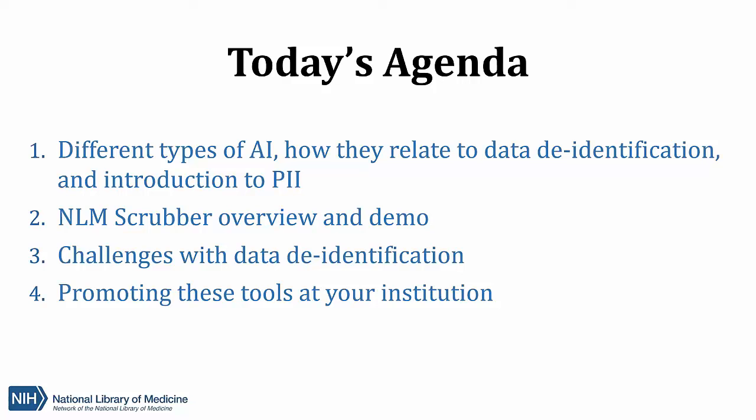As part of introducing today's main topic — tools for clinical text de-identification — we're going to talk briefly about some of the technology behind the NLM Scrubber and other de-identification tools, mainly natural language processing or NLP. We want to give this foundation so that you better understand how these tools work and why they have the different strengths and weaknesses that they do. We'll also discuss the definitions and differences in what is considered personally identifiable information or PII, then talk about the NLM Scrubber, and finish with ideas for how to promote these tools at your institutions.